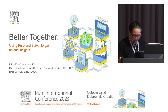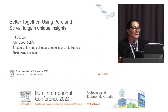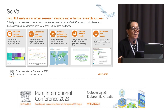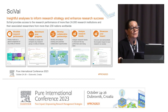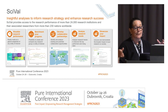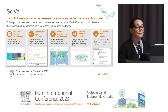SciVal is a web-based tool that allows you to take a close look at the research performance of over 24,000 research institutions and their associated researchers across the world. With SciVal, you can understand where your research strengths lie, which programs are the most impactful, and see how your university stacks up in a global context. While Pure provides an internal view of profiled researchers, SciVal broadens the perspective of both your own institution and that of your global collaborators and competitors.